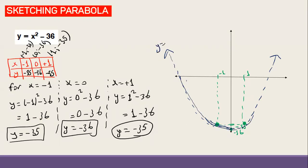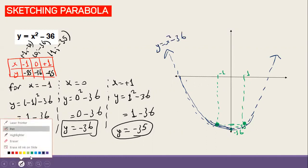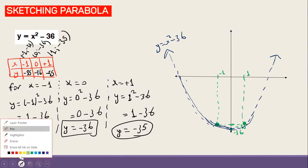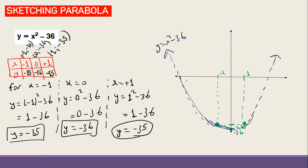A common mistake students make when drawing the shape is they draw it like this — going through sharp corners. This is totally wrong. The curve cannot pass through those points at an angle like that; it must be a smooth curve passing through all three points correctly.